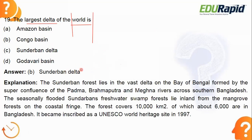The Sundarban Delta is also called the Ganges-Brahmaputra Delta and the Bengal Delta — all three names refer to the same place. The Sundarban Forest lies within this delta region. Please remember: the largest delta of the world is the Sundarban Delta, also known as the Ganges-Brahmaputra Delta and Bengal Delta.